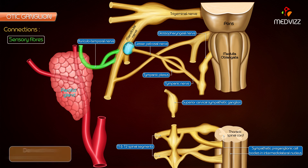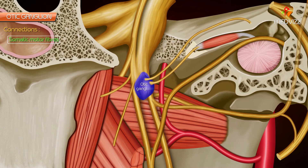Sensory fibers are derived from the auriculotemporal nerve. Somatic motor fibers are derived from the nerve to the medial pterygoid.